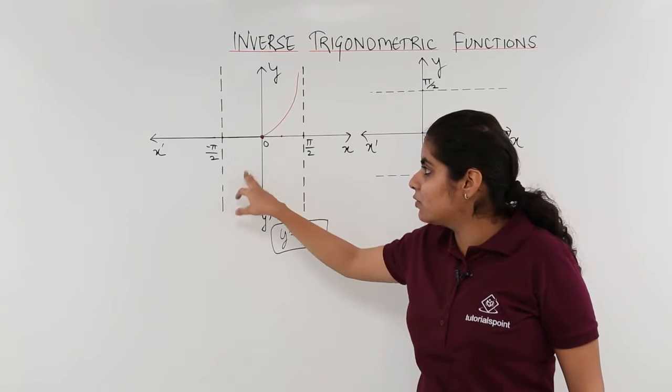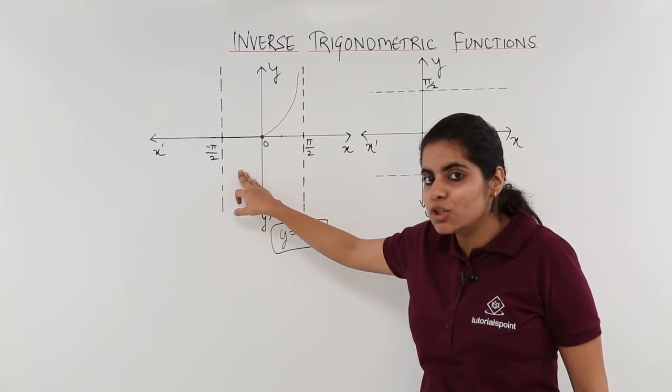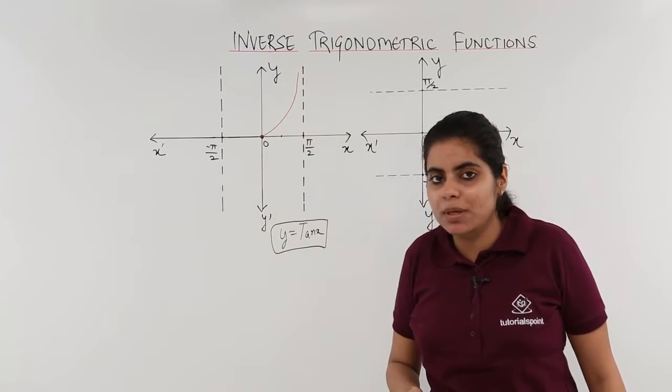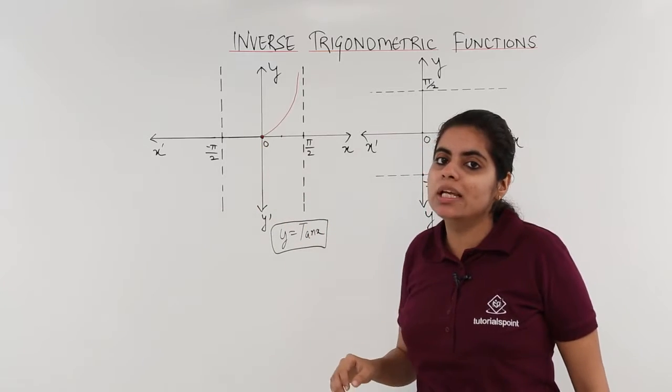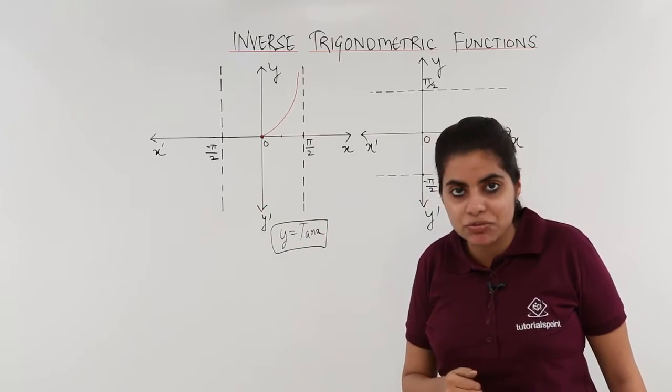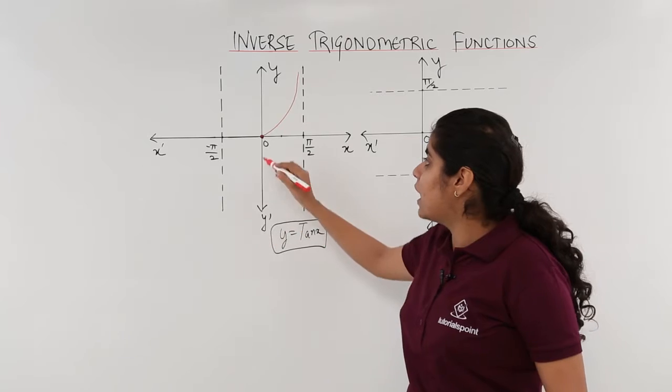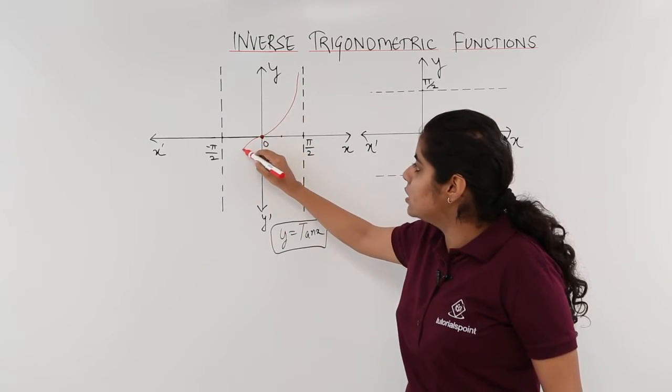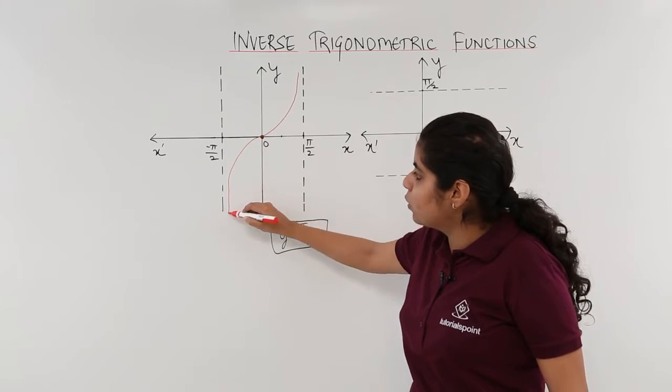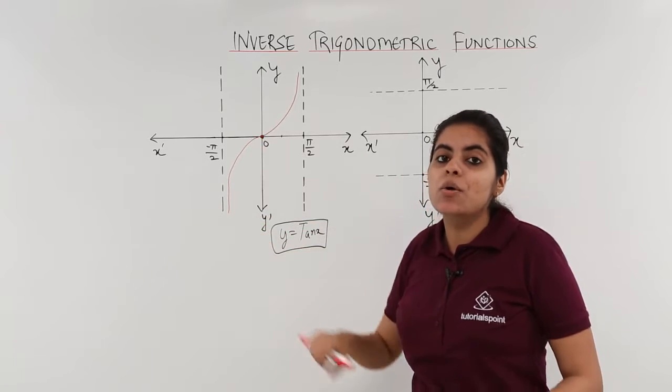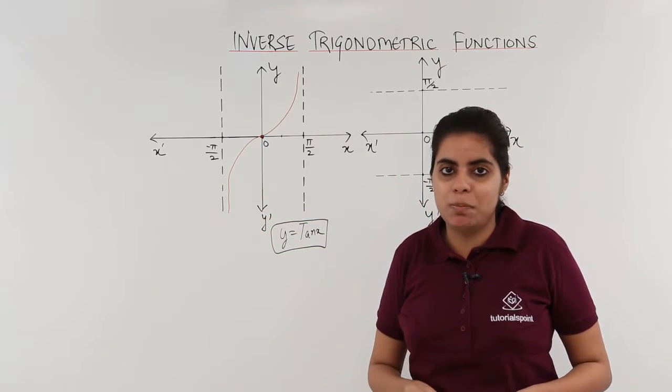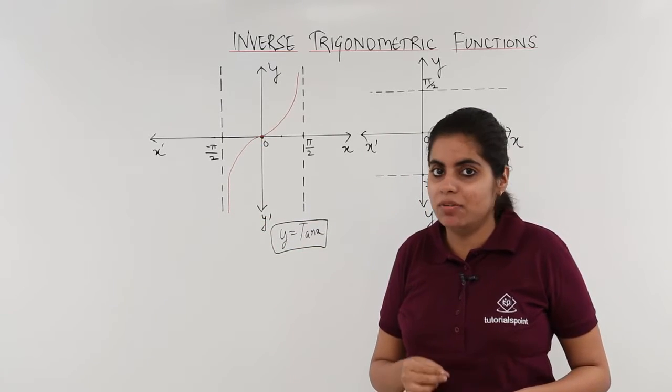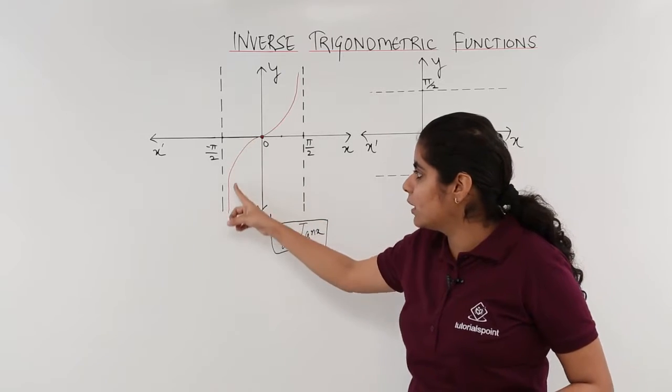And what about the other side of the graph? That means the lower portion of the graph. The same story repeats. Tan 0 is 0 only. The negative values will give me negative answers. And my graph will have the bulge here and it will go downwards. Why downwards? Because tan minus pi by 2 is minus infinite. When it is minus infinite, it will be going downwards.